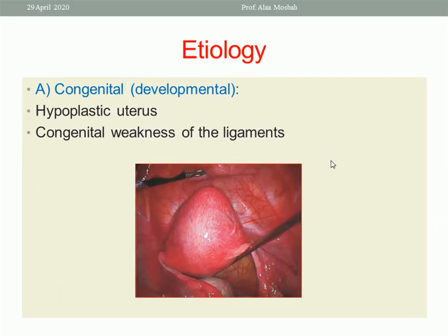What about the etiology of retroverted flexed uterus? It may be congenital or developmental, as in hypoplastic uterus. Also, in cases with congenital weakness of the ligaments which support the uterus — you know that many ligaments support the uterus, like the round ligament, uterosacral ligament, and Mackenrodt's ligaments. Weakness of these ligaments makes the body of the uterus shift backward.